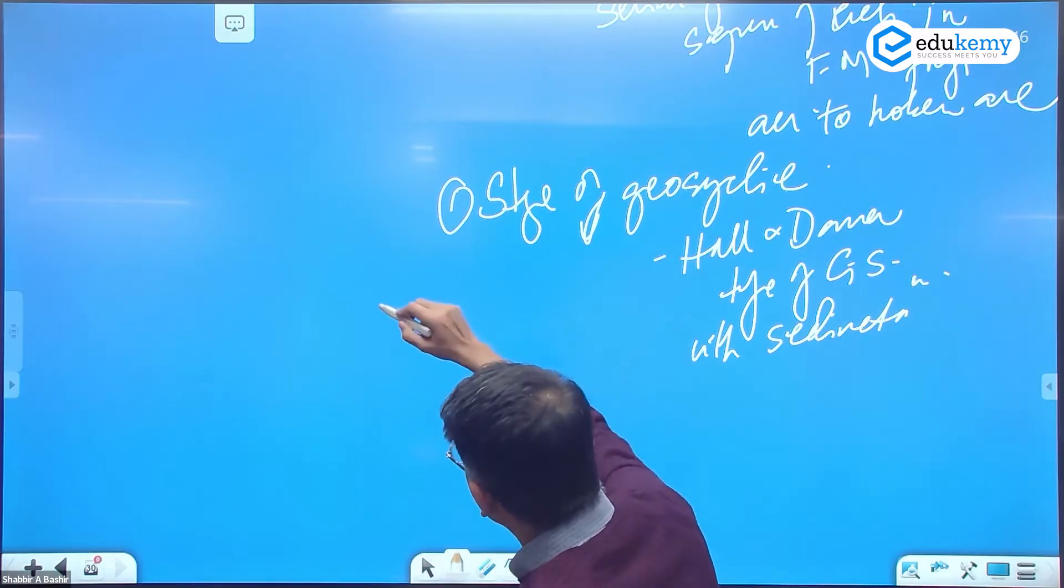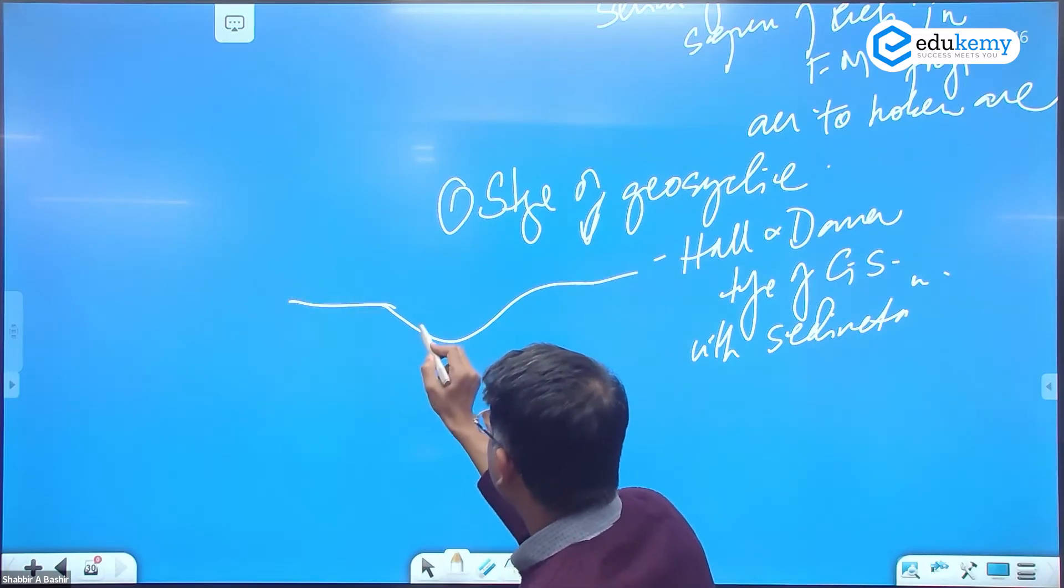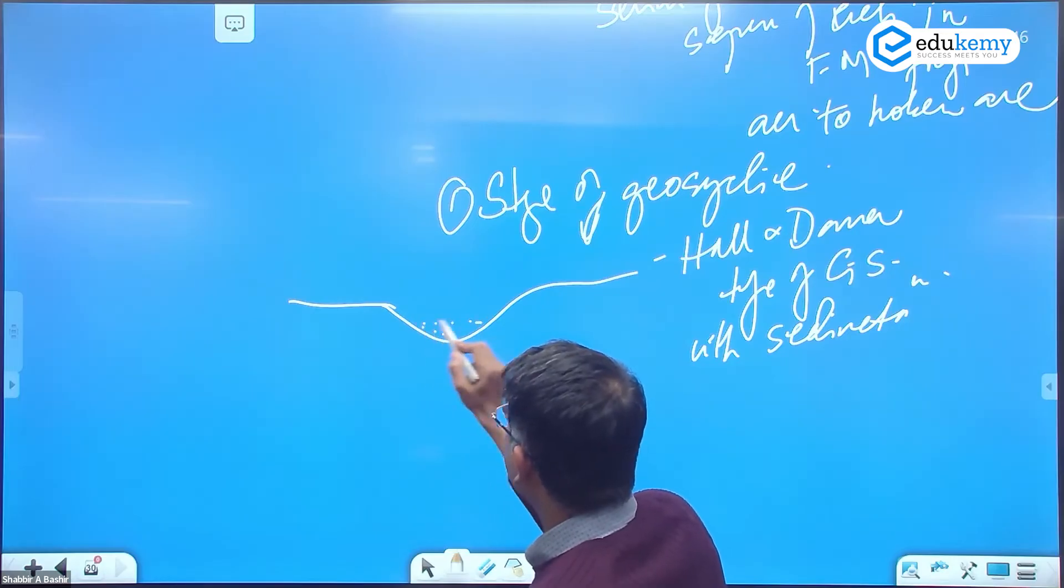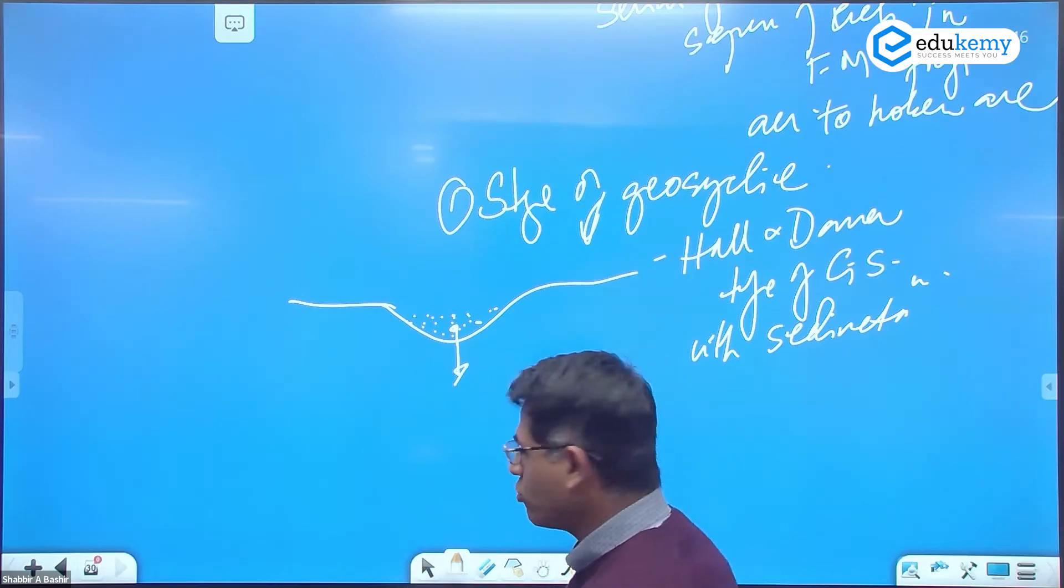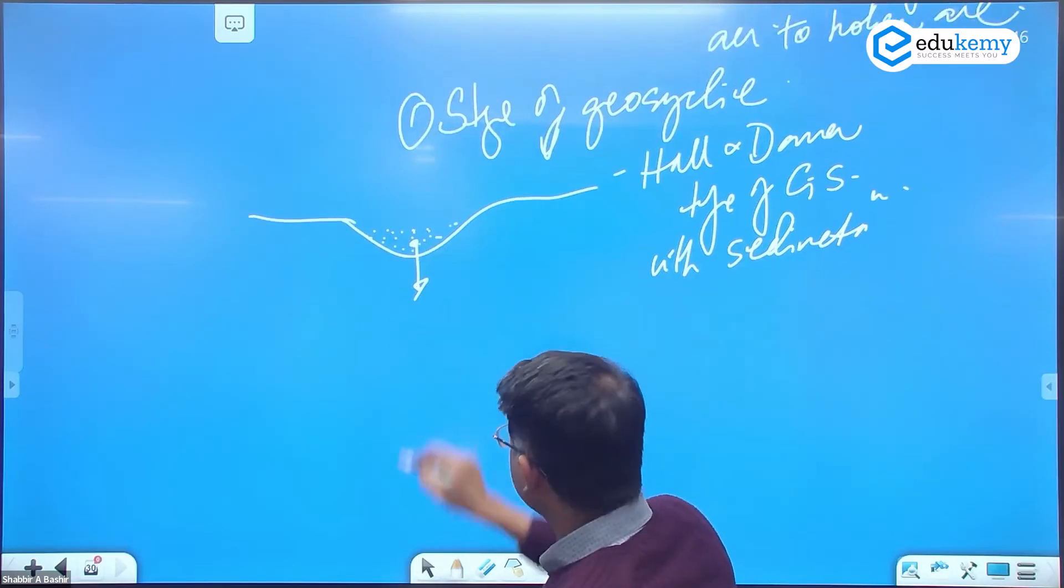It's a depression, in this depression sediments are accumulating and as sediments accumulate, the floor is sinking. This is the first stage, the geosyncline stage.